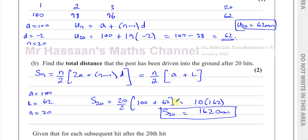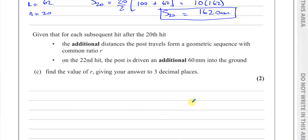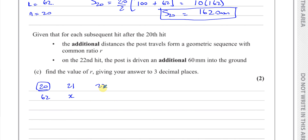Part C: given that for each subsequent hit after the 20th hit, the additional distances form a geometric sequence with common ratio R, and on the 22nd hit the post is driven an additional 60 millimeters. Find R to three decimal places. The 20th hit, which gave 62mm, is the first term of our new geometric sequence. Let the 21st hit be X and the 22nd hit is 60. The common ratio can be expressed as 60 over X and also as X over 62.